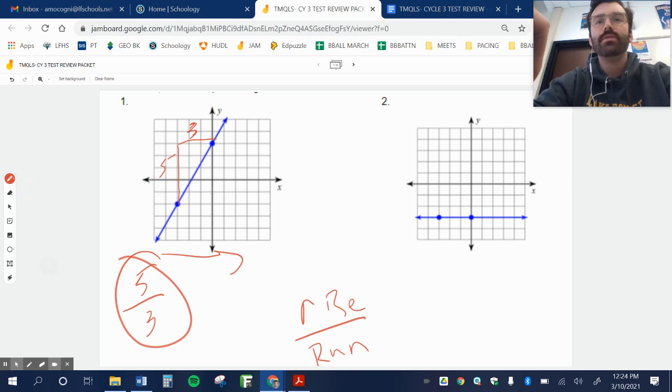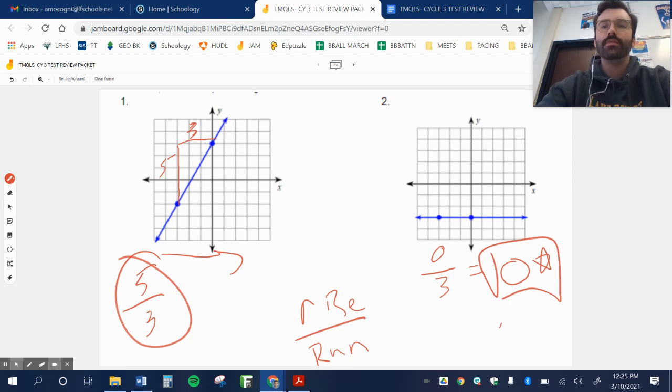All right, and number two, you'll see that's a horizontal line. Obviously, I'm not going up and down at all. I am going right three, so that's zero over three, where that slope is just zero. And that's every single time that there is a horizontal line.